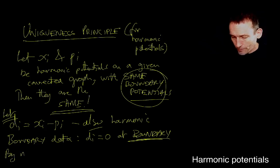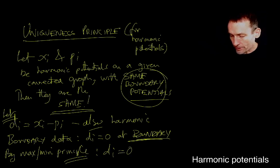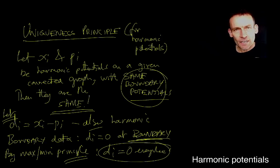And now, by the maximum and the minimum principle for harmonic potentials, Di is equal to zero everywhere. Because the maximum and minimum of Di is attained on the boundary, but the only boundary values are zero, which means that the maximum and minimum of Di are both zero, giving you no alternative but to have Di zero everywhere. And that means that Xi and Pi are equal everywhere, which means that it really is true that the harmonic potential solving the electric circuit problem and the harmonic potential solving the probability random journey problem are the same.